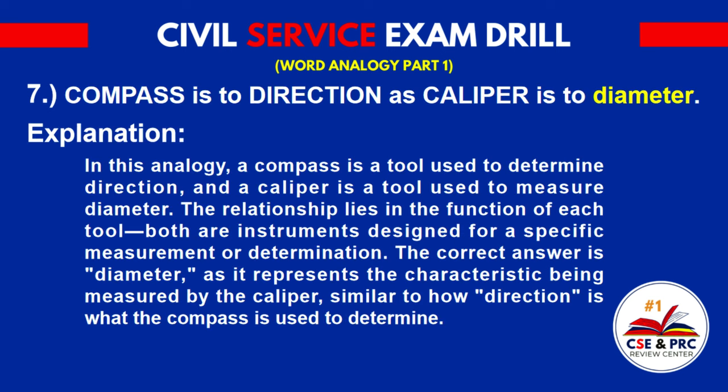Explanation: In this analogy, a compass is a tool used to determine direction, and a caliper is a tool used to measure diameter. The relationship lies in the function of each tool — both are instruments designed for a specific measurement or determination. The correct answer is diameter, as it represents the characteristic being measured by the caliper, similar to how direction is what the compass is used to determine.